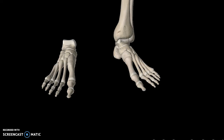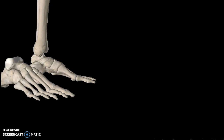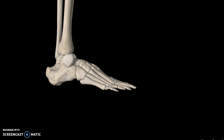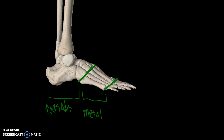This is a video tutorial for the bones of the foot. The foot consists of three different regions: the tarsals, which is the rear region; the metatarsals in the middle; and the phalanges at the front.